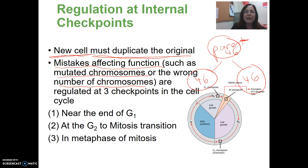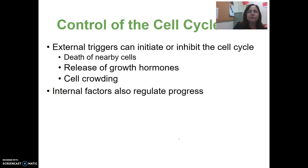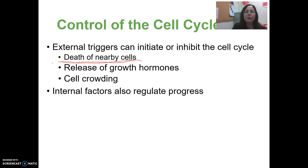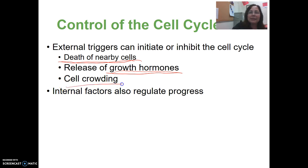There are three internal checkpoints that regulate the cell cycle: G1, G2, and an M checkpoint. External triggers can also initiate or inhibit the cell cycle. These external triggers can include the death of nearby cells, the release of growth hormones, and cell crowding.